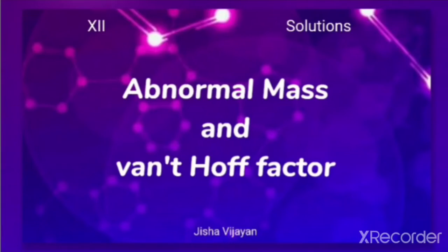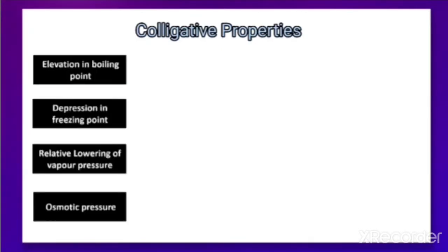In this video we are going to discuss about the abnormal molar mass and van't Hoff factor. We have already discussed in the previous sections about the colligative properties — properties like elevation in boiling point, depression in freezing point, relative lowering of vapor pressure, and osmotic pressure. We have learned that these properties depend upon the number of particles, not upon the nature of the particles.